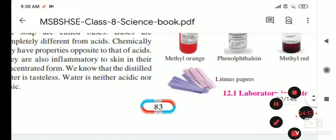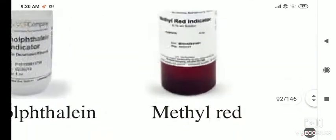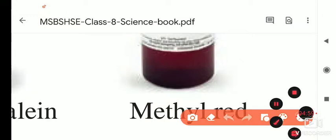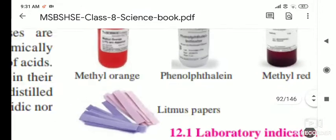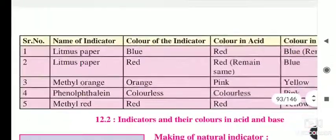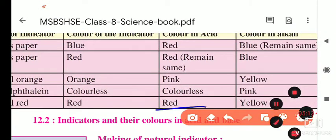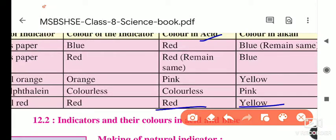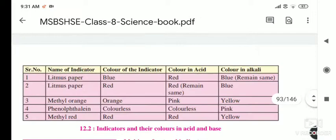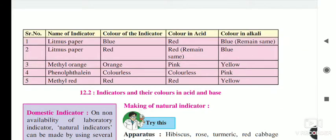Lastly, methyl red. The color of methyl red indicator is red. When you add it to acids, the solution turns red — then it is acidic in nature. When adding to a base, it shows yellow color. So if the substance changes to yellow, it is alkaline, and when it turns red, it is acidic. This is the change in color in acids and bases for different indicators.